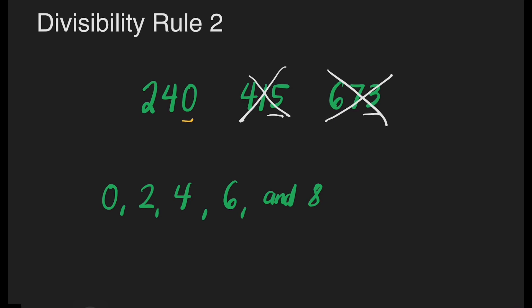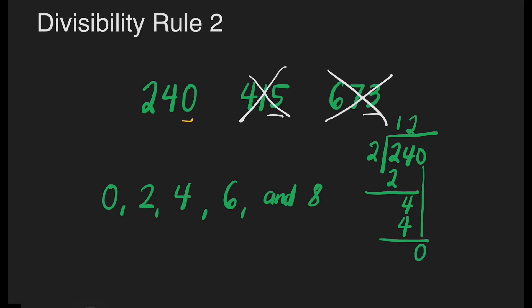Of course, we have to check by dividing 240 by 2. Let's divide that. 240 divided by 2: how many 2's are there in 2? That's 1. 1 times 2 is 2. Let's subtract — it's 0. Bring down 4. How many 2's are there in 4? That's 2. 2 times 2 is 4. Subtract — that's 0. Bring down 0. How many 2's are there in 0? That's 0. 0 times 2 is 0. So the answer is 120. When we say divisible, it has no remainder. We have 0 remainder here, so this number is divisible by 2.